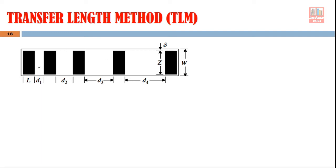Another interesting thing is that the gap between the contacts is different. D1 is the gap between the first pair of contacts, D2 is the gap between the second pair, and so on. W is the width of this diffused channel and Z is the width of the contact.